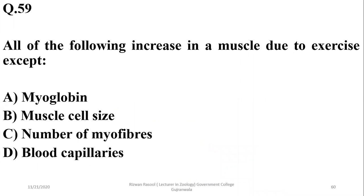All of the following increase in a muscle due to exercise except: myoglobin, number of muscle fibers, muscle size, or blood capillaries. Muscle fatigue resistance increases, but the number of myofibers remains the same — muscle cells do not increase in number. So the answer is number of myofibers.